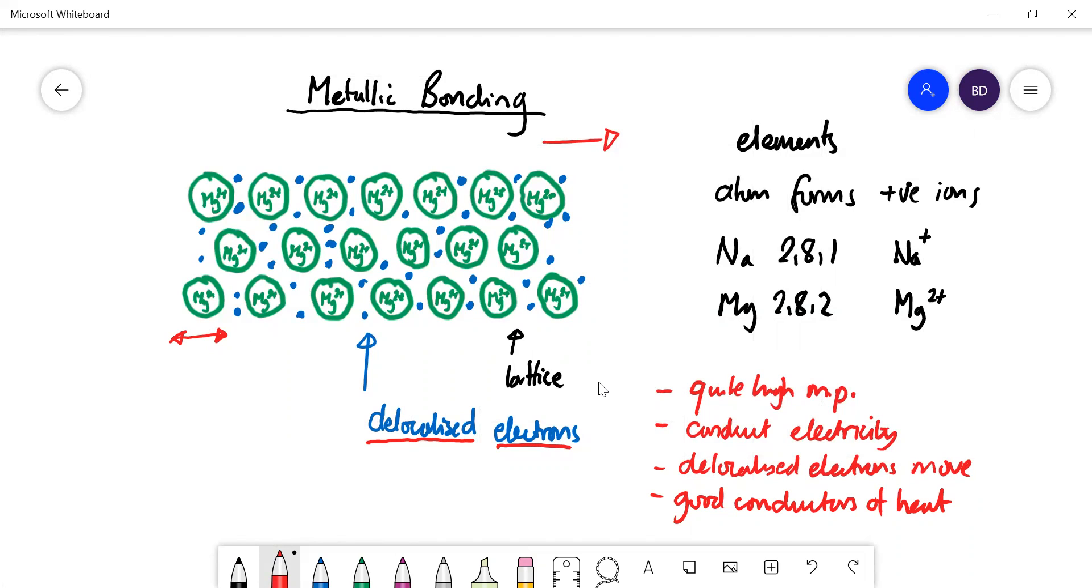Another very important property of metals is of course that they are malleable. That means they are relatively soft and you can hammer them into different shapes and so forth.